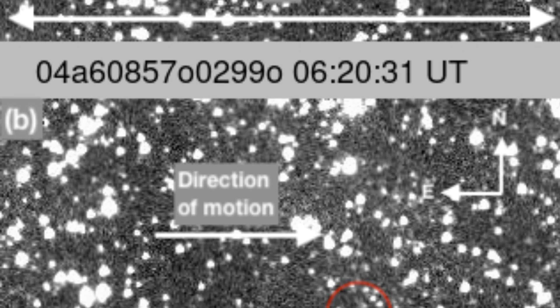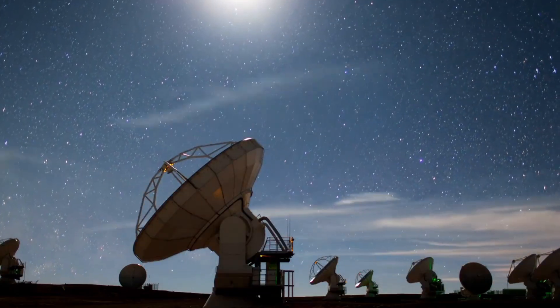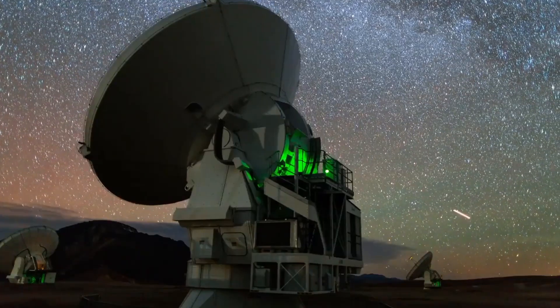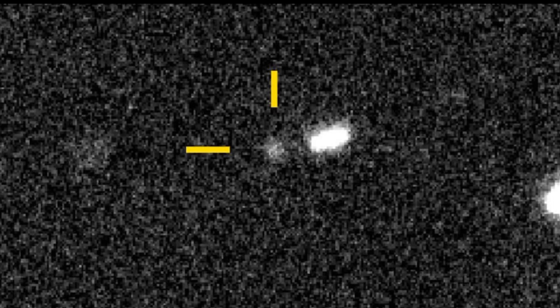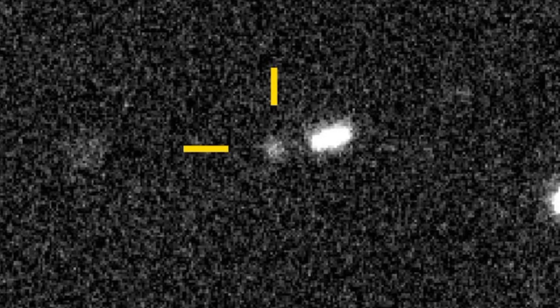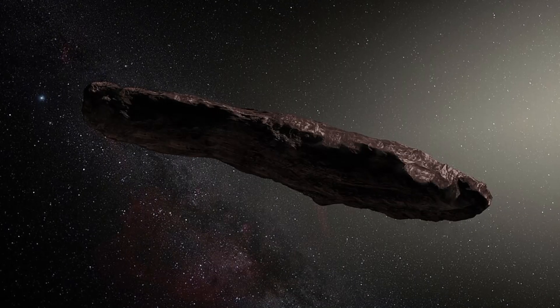With over 110 observations from 31 observatories, the object's extreme trajectory was confirmed. Just days later, it earned the name 3i-Atlas, with 3i marking it as the third known interstellar interloper after Oumuamua and 2i-Borisov.